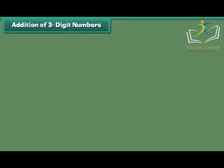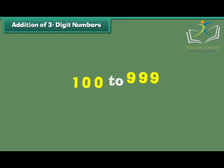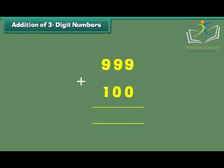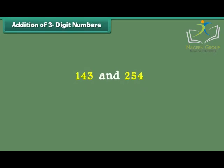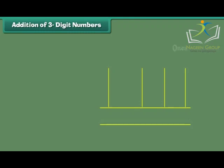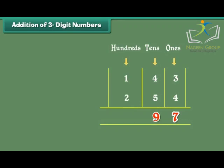Addition of 3 digit numbers. The numbers from 100 to 999 are called 3 digit numbers. In order to add two 3-digit numbers, we first add the digits at the 1s place, then the digits at the 10s place, and finally the digits at the 100s place. Let us add 143 and 254. The digits at the 1s place are 3 and 4; 3 plus 4 is equal to 7. The digits at the 10s place are 4 and 5; 4 plus 5 is equal to 9. The digits at the 100s place are 1 and 2; 1 plus 2 is equal to 3. Therefore, 143 plus 254 is equal to 397.